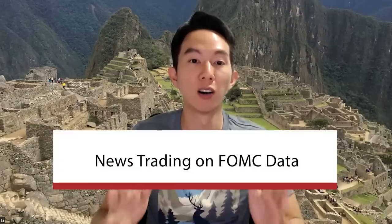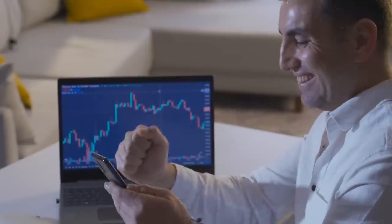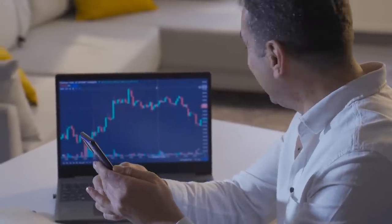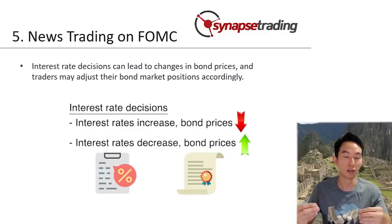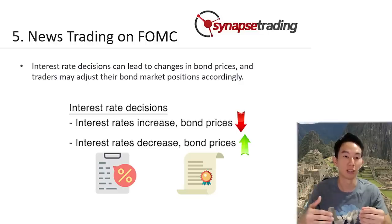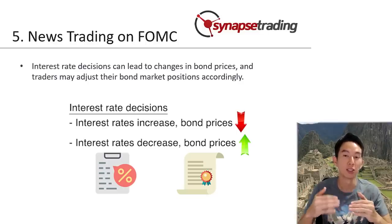Lastly, news trading on the FOMC data. As a trader or investor, how are you going to use all this data to make your trading or investing decisions? Here are a few practical examples. Number one: the interest rate decision. If the FOMC raises interest rates, it can lead to higher bond yields, which causes bond prices to fall. So traders anticipate this and will adjust their positions in the bond market accordingly. Similarly, if the FOMC lowers interest rates, bond prices may rise and traders will adjust their positions as well.